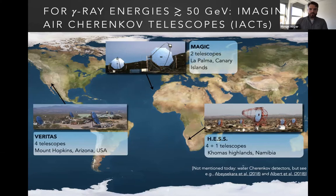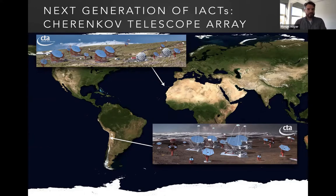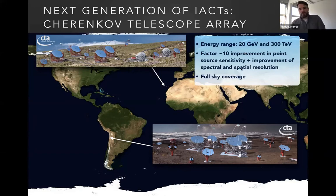The future of Cherenkov telescopes is almost here: the Cherenkov Telescope Array, or CTA. It will have two sites — on the Canary Islands and in the Atacama Desert in Chile. You see artists' impressions of how these arrays will look. On the Canary Islands, for example, you see the old MAGIC telescopes alongside the different-sized telescopes of CTA. The covered energy range foreseen for CTA is between 20 GeV and 300 TeV, and the goal is a factor of 10 improvement in point source sensitivity compared to currently operating Cherenkov telescopes, plus improvement in spectral and spatial resolution. Thanks to the two sites, we can observe the full sky.